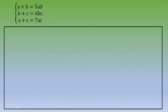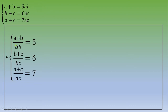When you have such a system to solve, one idea is to put all the letters on the left and all the numbers on the right. For the first equation, you divide both sides by AB, getting A plus B over AB equals 5. The same process gives B plus C over BC equals 6, and A plus C over AC equals 7.